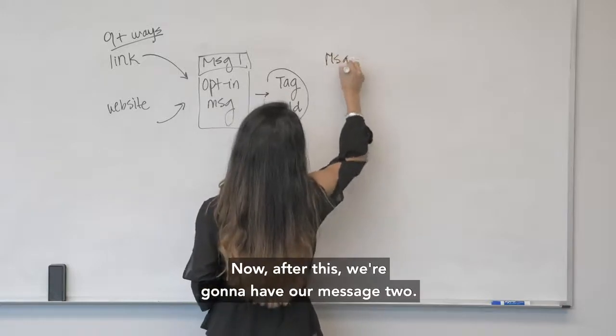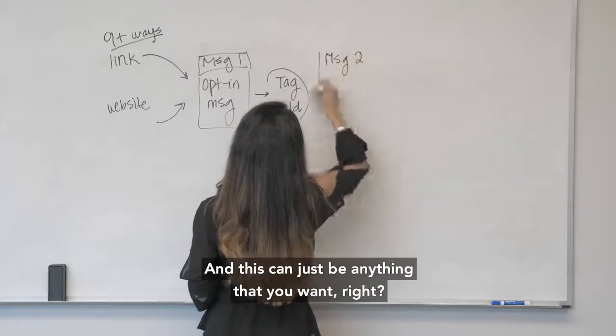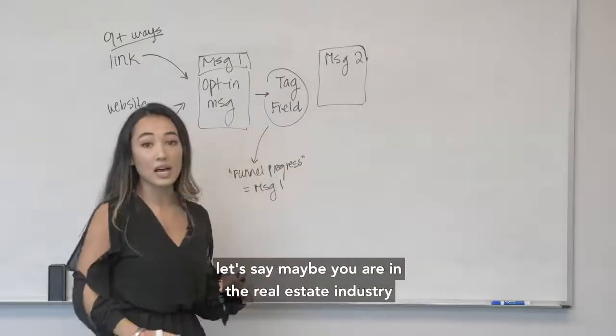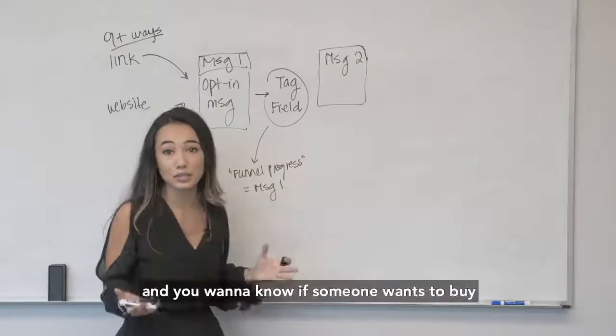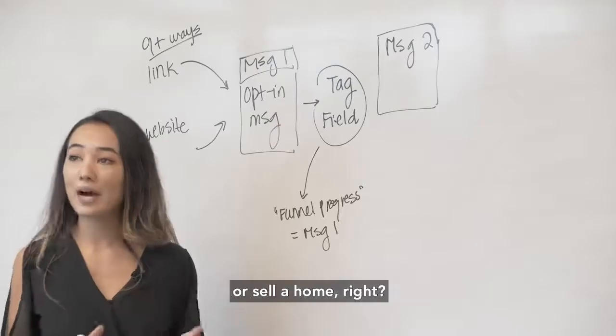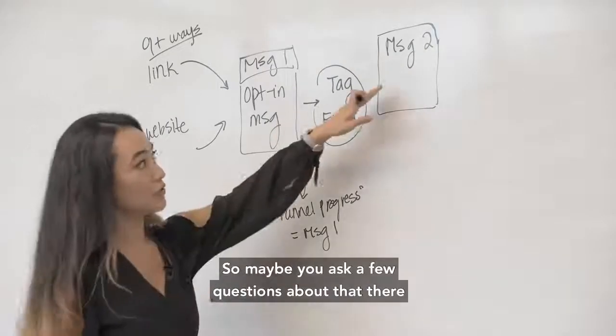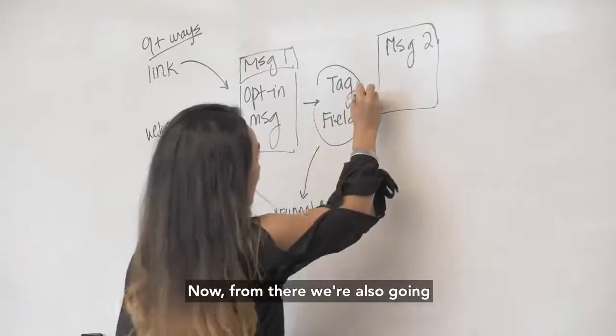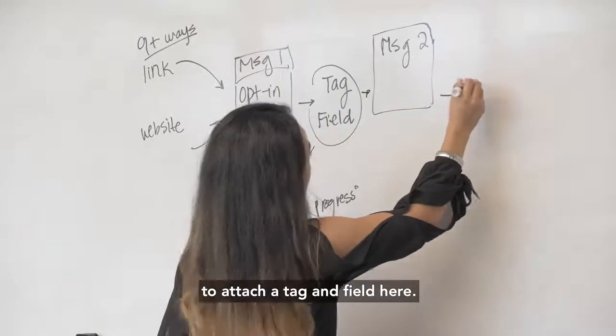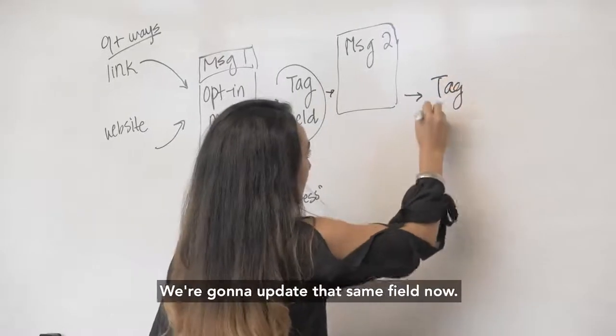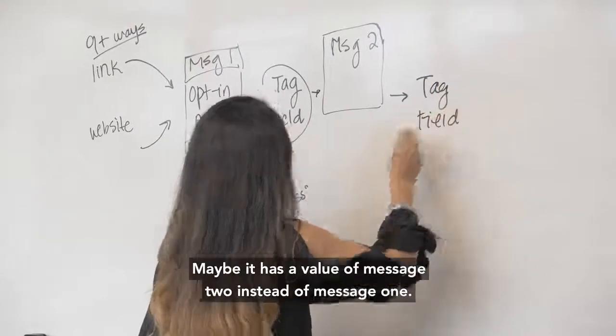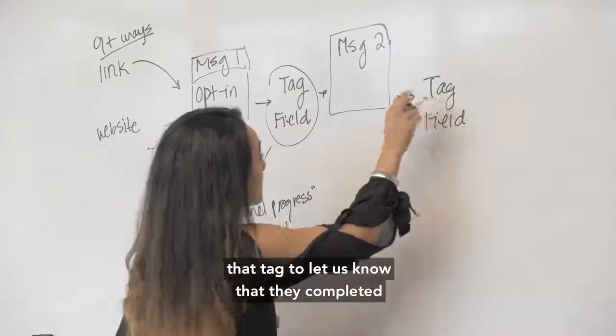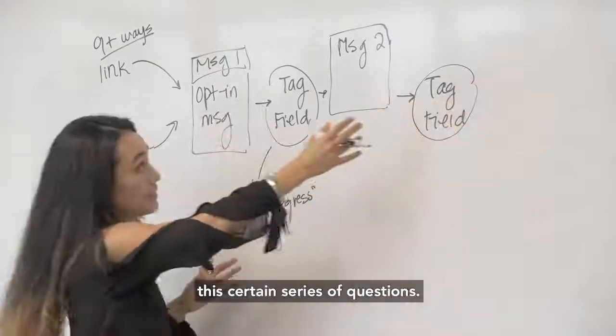After this we're going to have our message two, and this can just be anything that you want. This might be where you're asking some questions—let's say maybe you're in the real estate industry and you want to know if someone wants to buy or sell a home, so maybe you ask a few questions about that there, or any sort of segmenting information that you need. From there we're also going to attach a tag and field here. We're going to update that same field, now maybe it has a value of message two instead of message one, and we're also just going to use that tag to let us know that they completed this certain series of questions.